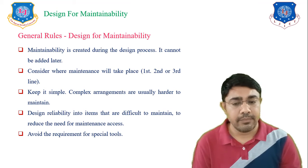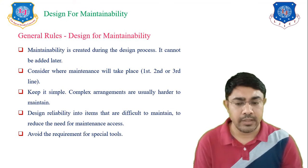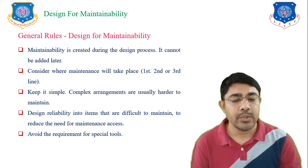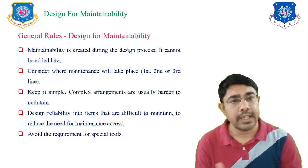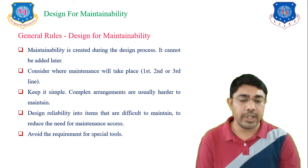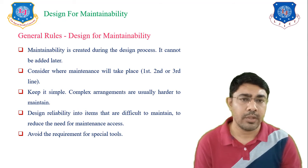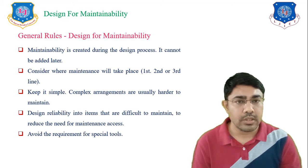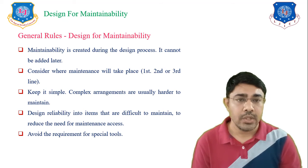The third rule is to keep it simple — complex arrangements are usually harder to maintain. The fourth rule is to design reliability into items that are difficult to maintain, so as to reduce the need for maintenance. The fifth rule is to avoid the requirement for special tools — design components such that replacing parts never requires special tools. These are the general rules for Design for Maintainability to consider while designing any component.